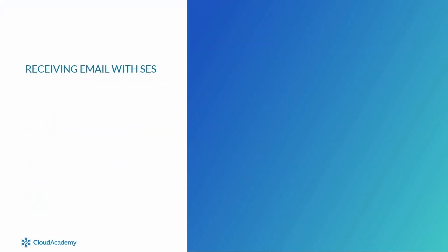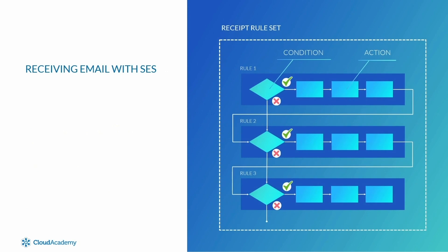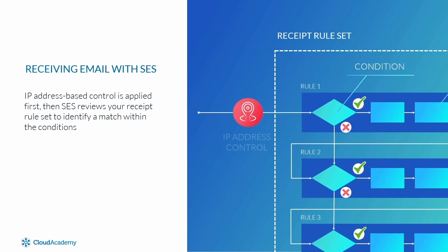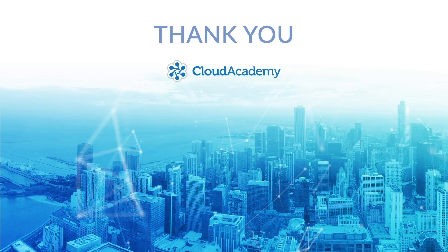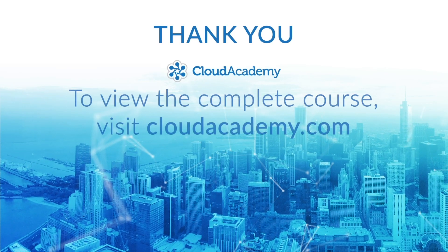With both processes in place, the incoming flow of email to SES is as follows: IP Address Based Control is applied first to identify if the email should be allowed or blocked. If allowed, SES reviews your receipt rule set to identify a match within the conditions. If no conditions are met, the email is dropped. If a match is found, SES carries out the action based on the matching rule. Now we have a clear understanding of what is required — let's get started with the training.